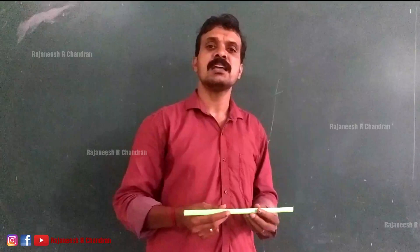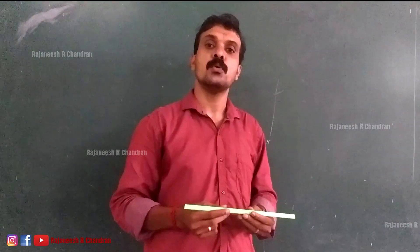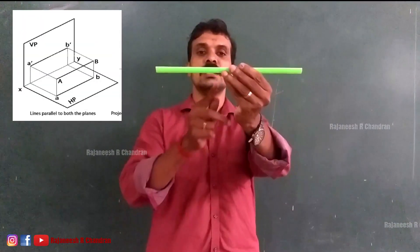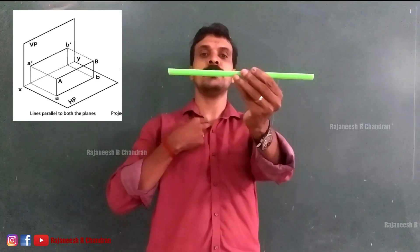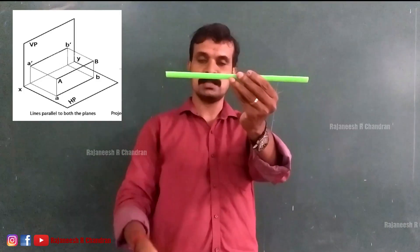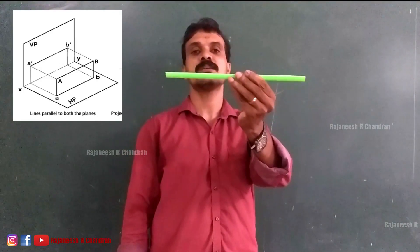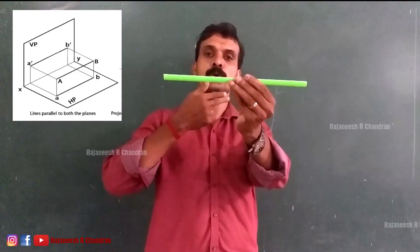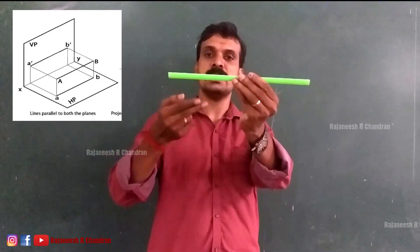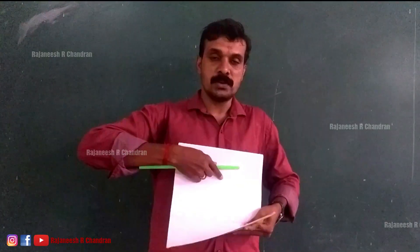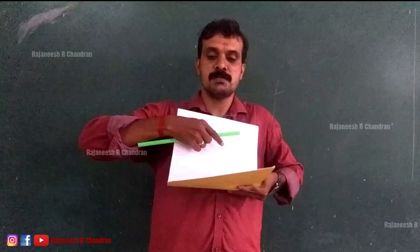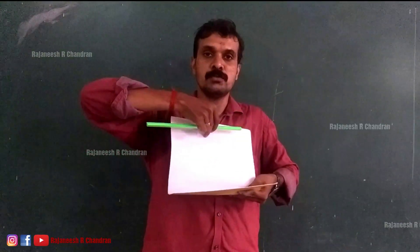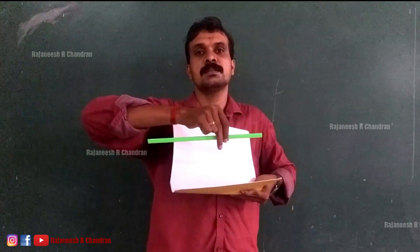So, what is a line which is parallel to both HP and VP? This is a line. This line is parallel to VP as well as parallel to HP. This is the physical position of a line which is parallel to both HP and VP. If this is VP and this is HP, now this line is parallel to VP as well as to HP.